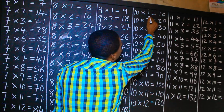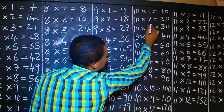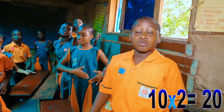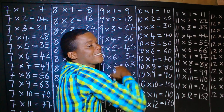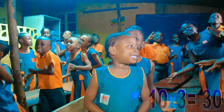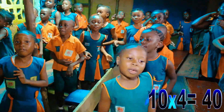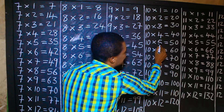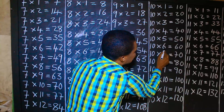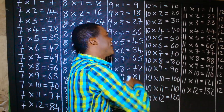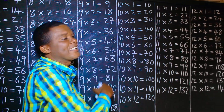Ten times one is ten! Ten times two is twenty! Ten times three is thirty! Ten times four is forty! Ten times five is fifty! Ten times six is sixty! Ten times seven is seventy!